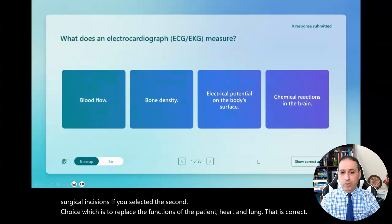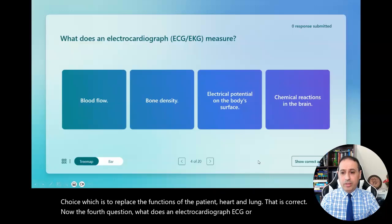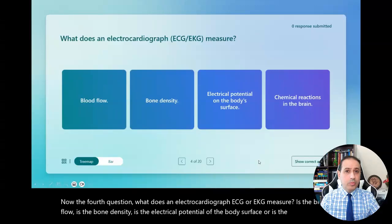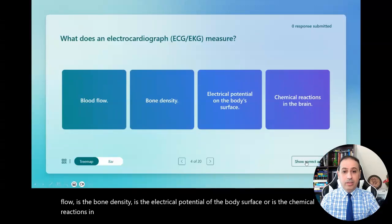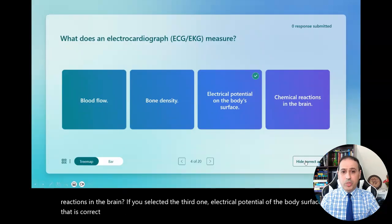Now the fourth question: what does an electrocardiograph ECG or EKG measure? Is it blood flow, bone density, electrical potential of the body surface, or chemical reactions in the brain? If you selected the third one — electrical potential of the body surface — that is correct, because it is measuring biopotentials.